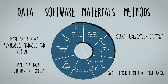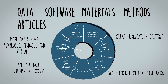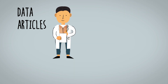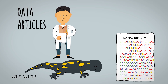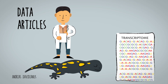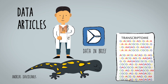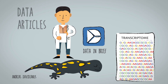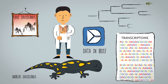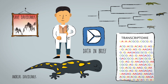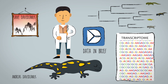For example, data articles make it possible for researchers to discover and access data through descriptions which are peer-reviewed and citable. When Chinese researchers sampled the transcriptome of the largest amphibian in the world, they chose to publish in the journal Data in Brief. A full record of the salamander's active RNA — valuable data for conservationists and phylogenomics researchers — is now available online and easy to find.